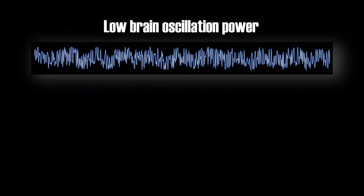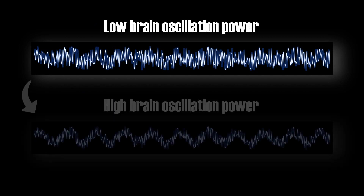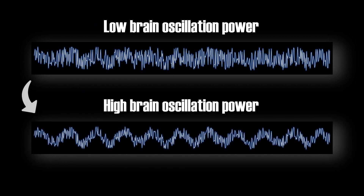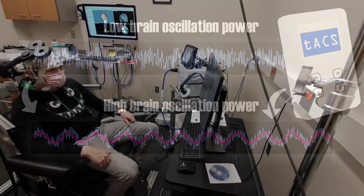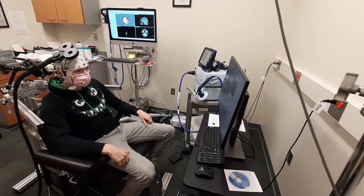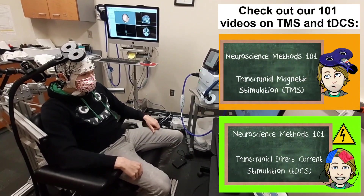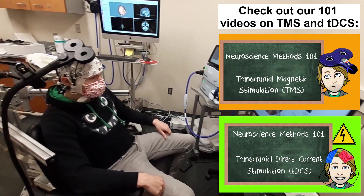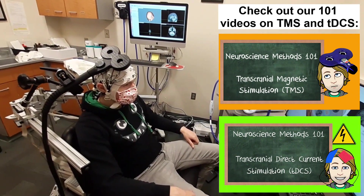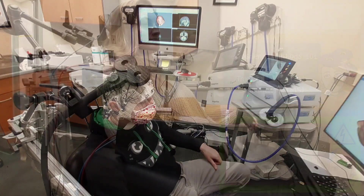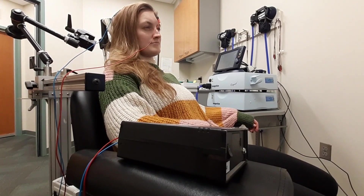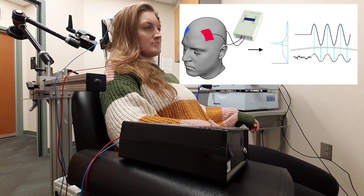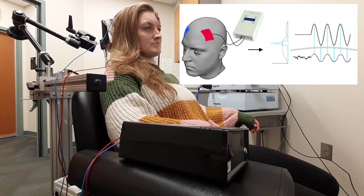Now, if we know that these brain waves are important for various functions in the brain, one could argue that making these brain waves stronger will also improve that particular function. That is exactly what TACS attempts to do. Other non-invasive brain stimulation methods, like TDCS and TMS, can be used to increase or decrease brain activity in general, regardless of any brain wave frequency. TACS is a little bit different — it does not try to make neurons fire more or less, but rather it tries to synchronize them, such that your brain waves become more pronounced. This effect is referred to as entrainment.